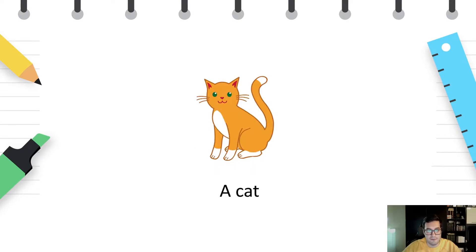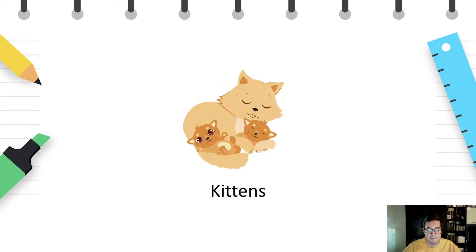A cat. Repeat after me. A cat. Kittens. Kittens are cat's little babies. We say they are kittens. Repeat after me. Kittens.